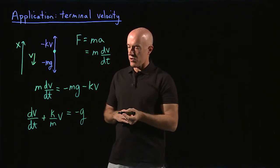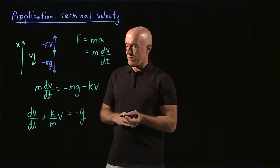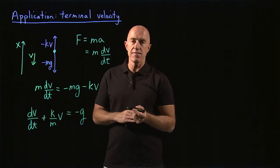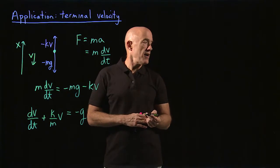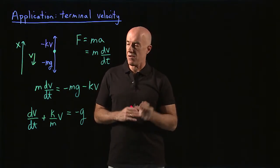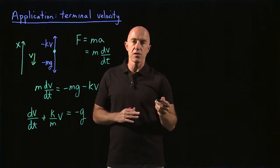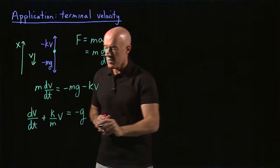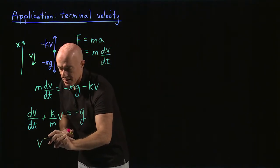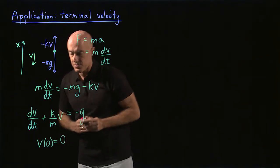And that's the first order linear equation in standard form. We have to assume some initial velocity for the skydiver. We might as well assume that he's jumping out of an airplane that's flying horizontally. So his initial vertical velocity is zero. So let's just take v of zero, which is the vertical velocity equal to zero.